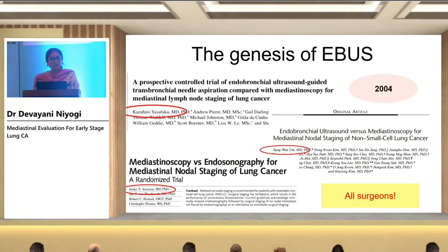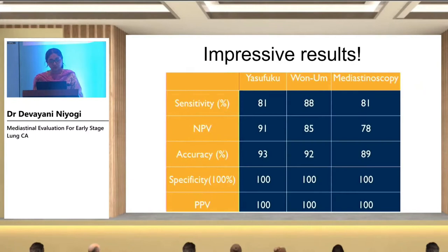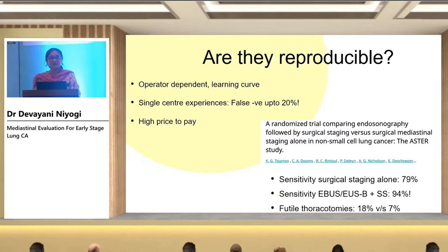This is the genesis of EBUS. Three seminal papers came out as early as 2004. If you look at the authors — Yasufuku or Annema — all were thoracic surgeons. So EBUS, though an endobronchial procedure, was a thoracic surgeon's brainchild. The early results from these centers were extremely impressive — sensitivity and specificity almost approaching that of the gold standard, mediastinoscopy — and this was back in 2004.